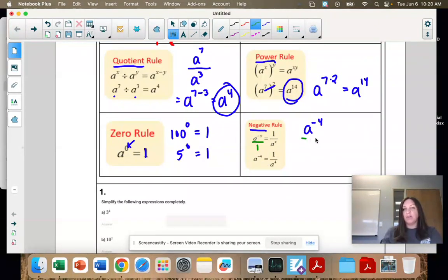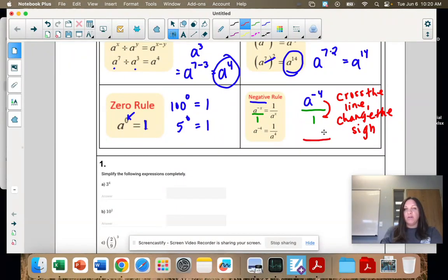And then we say cross the line, change the sign. So I would bring the a to the 4th power to the denominator as a positive 4. We're changing the sign of the exponent. And then when there's nothing left on the numerator or denominator, you have a 1. And that's how we get that.